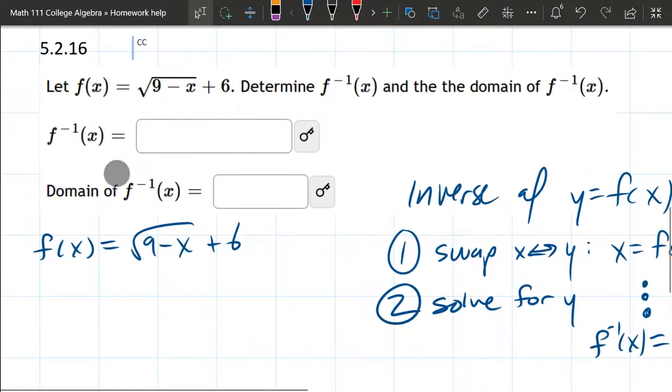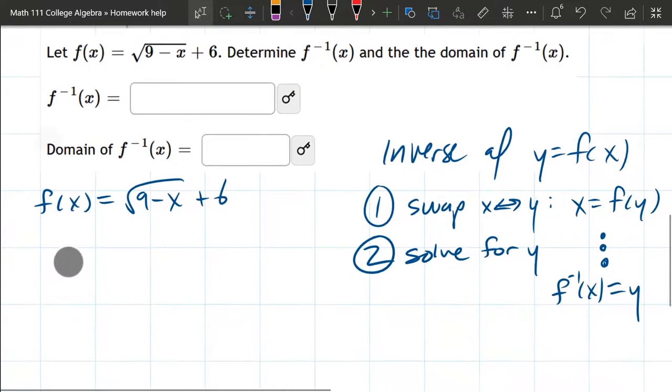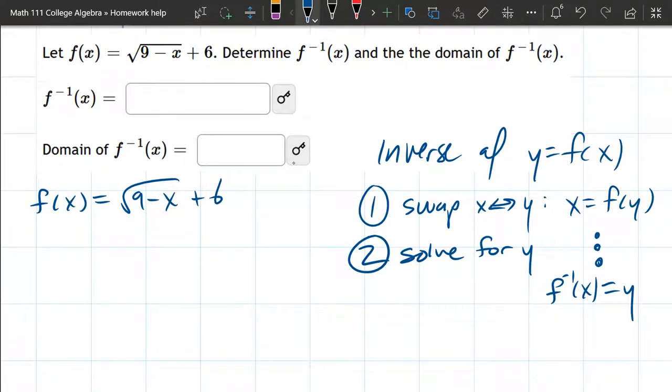Alright, so let's go ahead and get started here. There is no y. That's okay because f(x) is equal to y. So we got y equals square root 9 minus x plus 6. We're ready for step one.